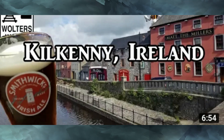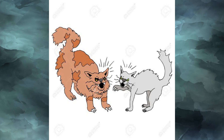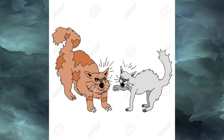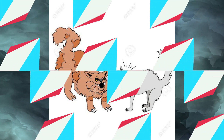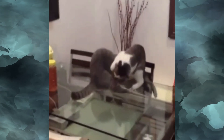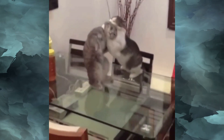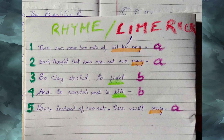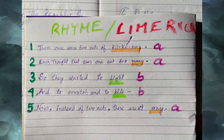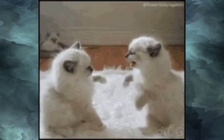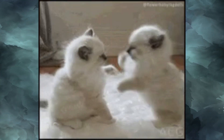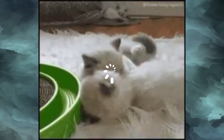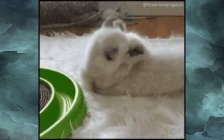The poem: Kilkenny Cats. There once were two cats of Kilkenny. Each thought there was one cat too many. So they started to fight and to scratch, to bite. Now, instead of two cats, there are not any.